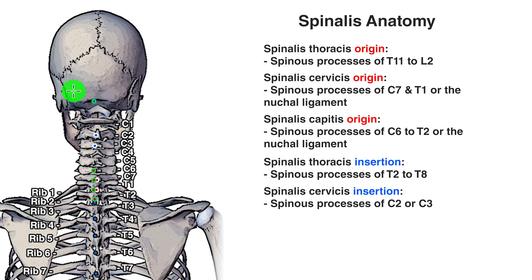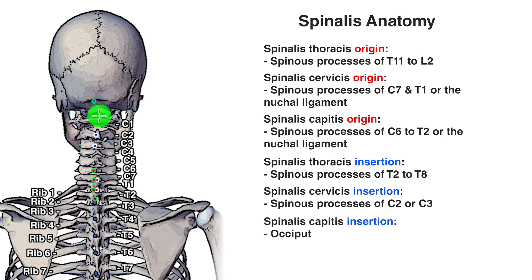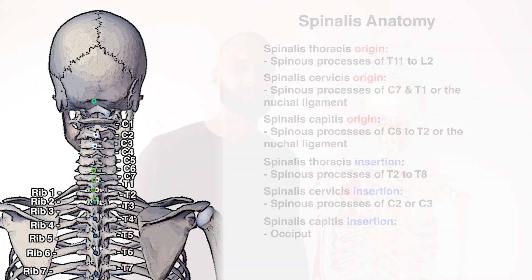Our last insertion, shown with the green outline, is for the spinalis capitis section. It inserts onto the occiput. The occiput is located on the back of the head — it's essentially where the skull meets the back of the neck.